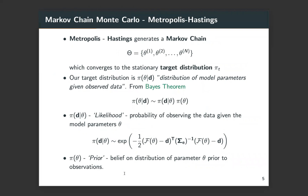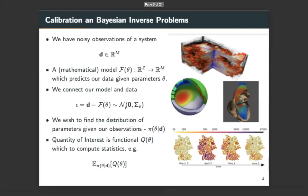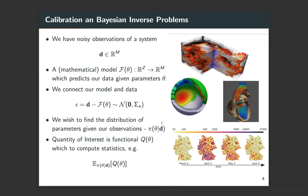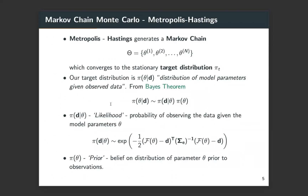What we really want is samples from the distribution theta given D. One way of doing that is Markov chain Monte Carlo methods. Within that, a subset - the simplest vanilla methods - are Metropolis-Hastings methods. Metropolis-Hastings basically generates what we call a Markov chain: a sequence of vectors of the input parameters from one to N. The algorithm is designed in such a way that it converges to your target distribution, which in our case is the distribution of theta given D. From Bayes' theorem, sampling from this directly unless it's a really simple problem is not possible.